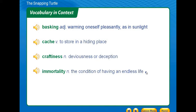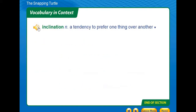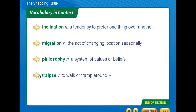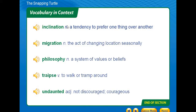The basking sunbathers enjoyed the afternoon breeze — 'basking' means warming oneself pleasantly, as in sunlight. 'Undaunted,' the bird flew on — meaning unafraid, not discouraged, courageous. So here is our vocabulary summary: basking — warming oneself pleasantly as in sunlight; cache — to store in a hiding place; craftiness — deviousness or deception; immortality — the condition of having an endless life; impregnable — impossible to enter by force; inclination — a tendency to prefer one thing over another; migration — the act of changing location seasonally; philosophy — a system of values or beliefs; undaunted — not discouraged, courageous.